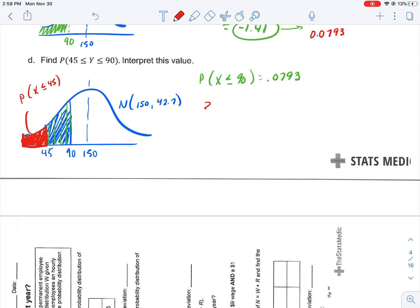So, what I'm going to do is the Z of 45 here, which is X minus mean over standard deviation explicit formula. Z of 45 is equal to 45 minus 150 over 42.7 explicit formula with values put in. So, my Z score of 45 is equal to negative 2.46, which from table A is 0.0069.